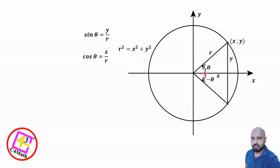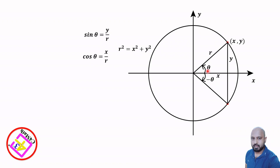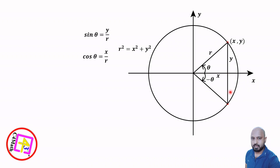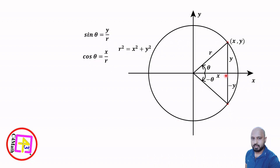These two triangles are congruent because one is the reflection of the other, so both angles are equal in magnitude. The first angle, in the anticlockwise direction, is theta. The other angle, in the clockwise direction, is negative theta. For the reflected triangle, the horizontal side remains x, but the vertical side is now in the opposite direction, so we take it as negative y. Therefore, the reflected point can be written as (x, negative y).